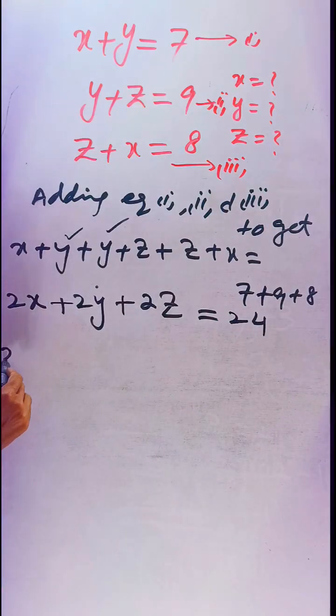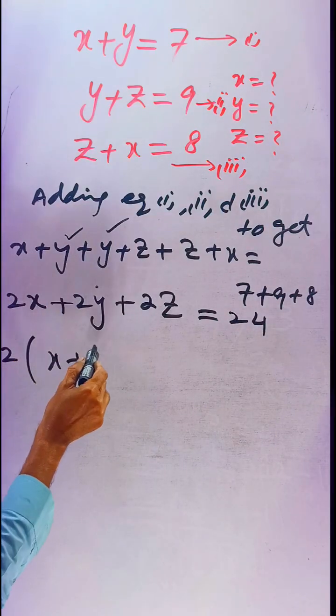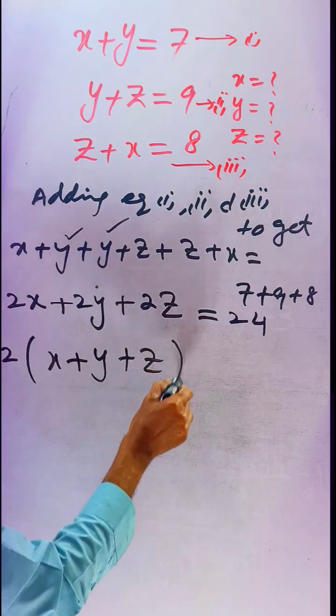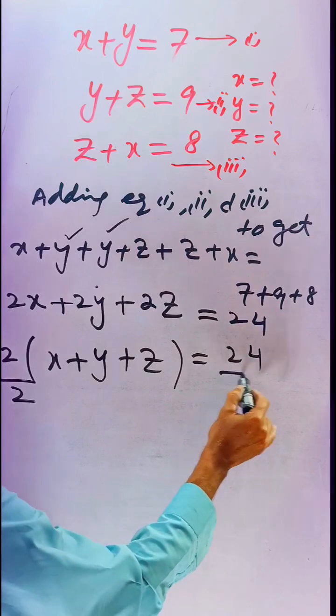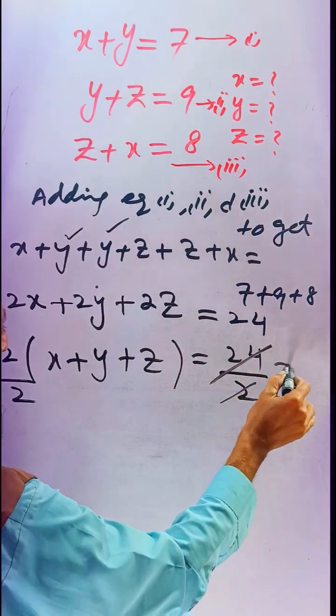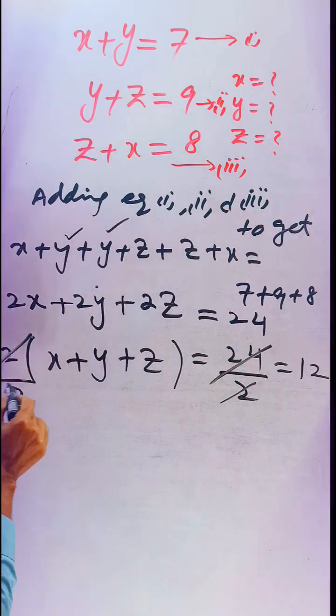Now dividing both sides by 2, the 2s cancel, and we get 12. So x plus y plus z equals 12.